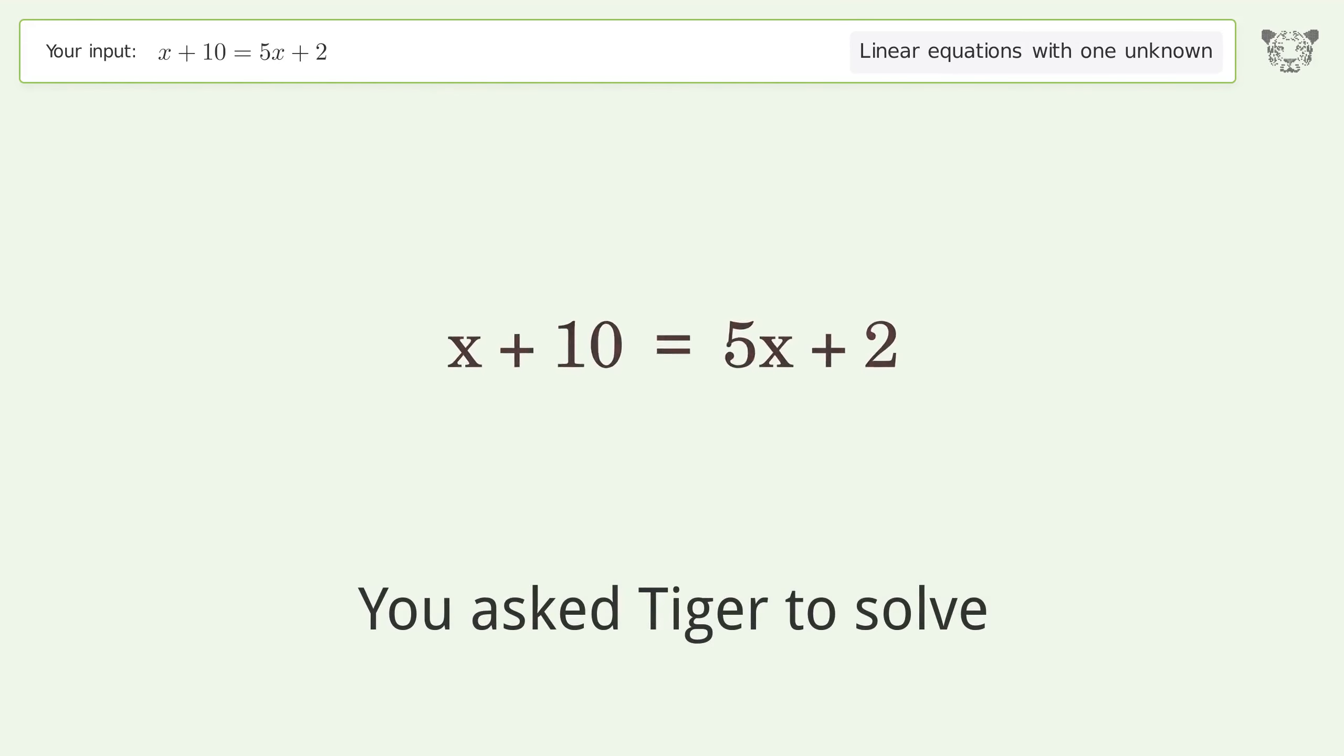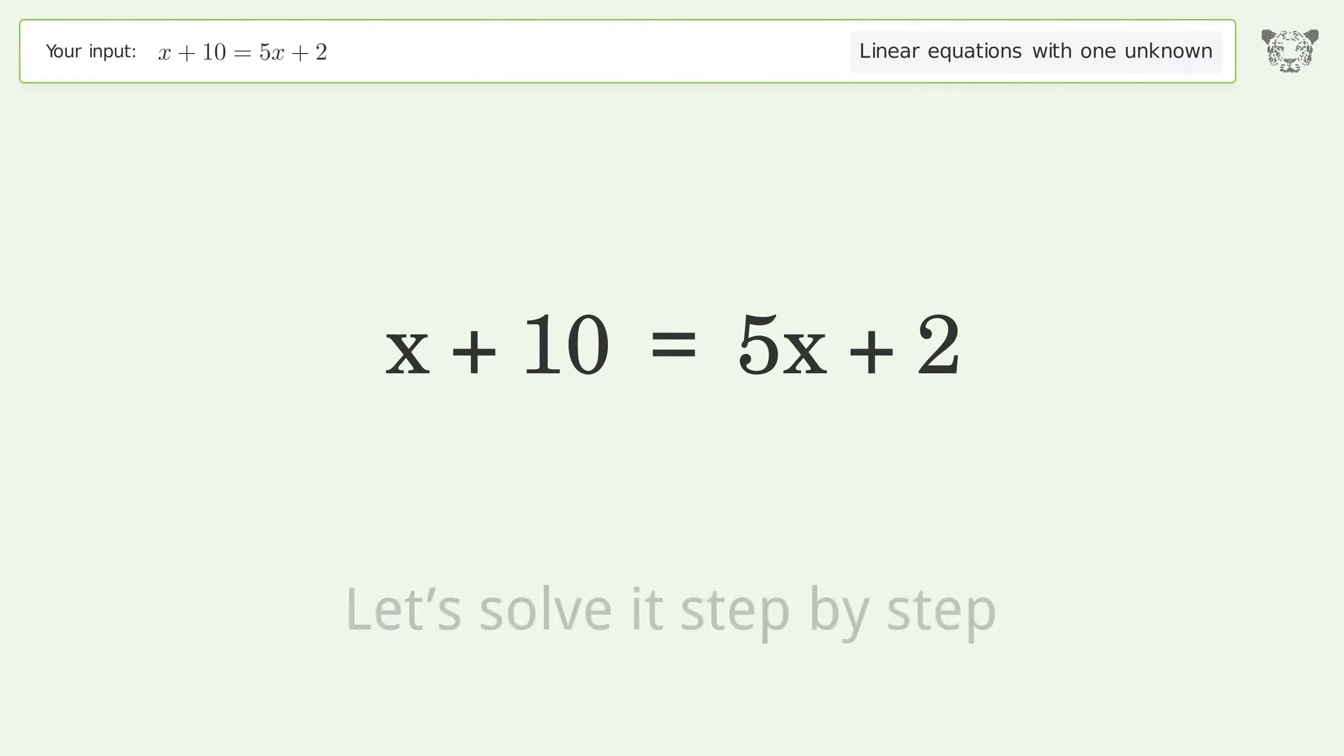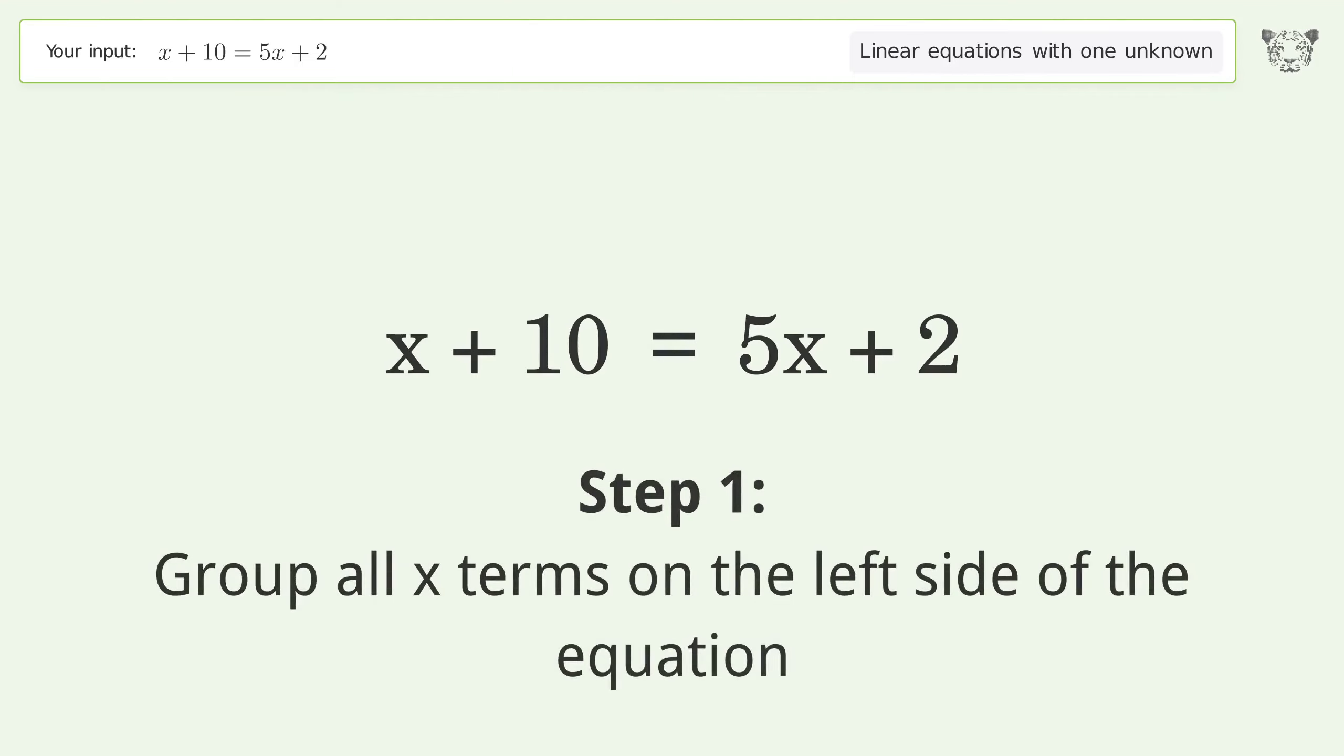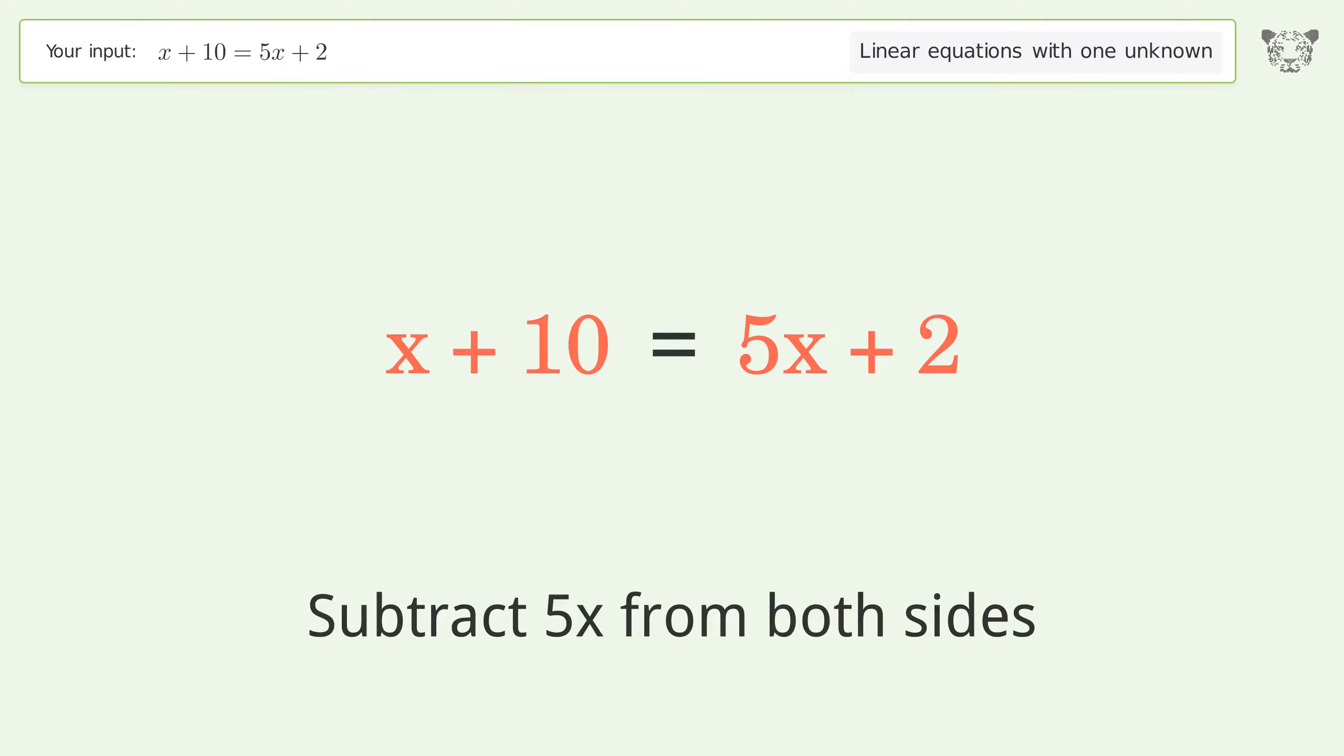You asked Tiger to solve this. It deals with linear equations with one unknown. The final result is x equals 2. Let's solve it step by step. Group all x terms on the left side of the equation. Subtract 5x from both sides.